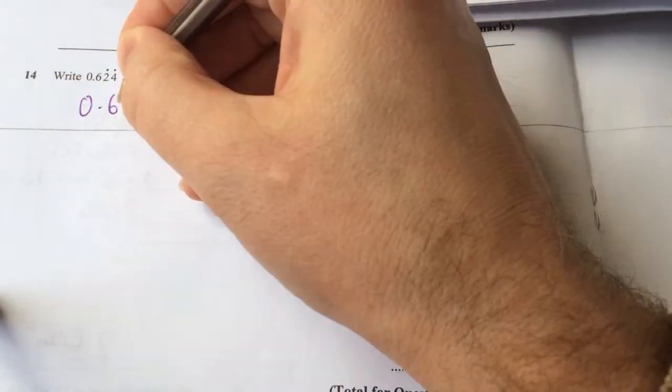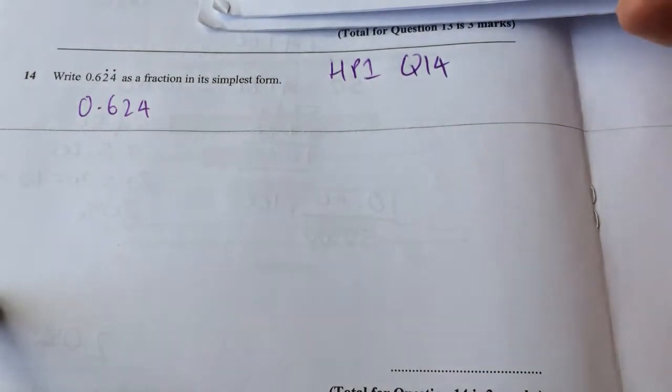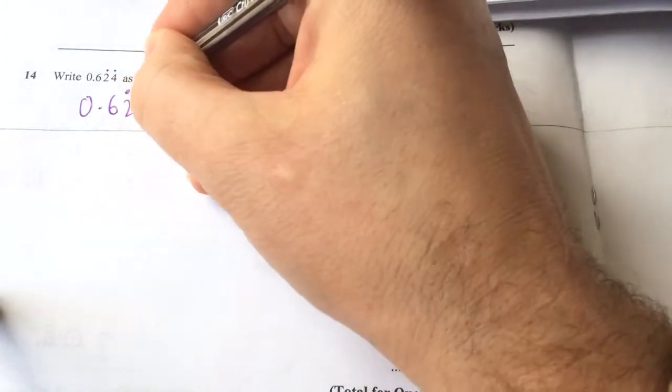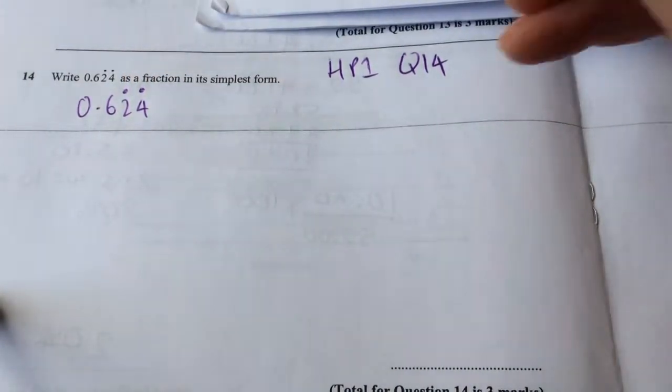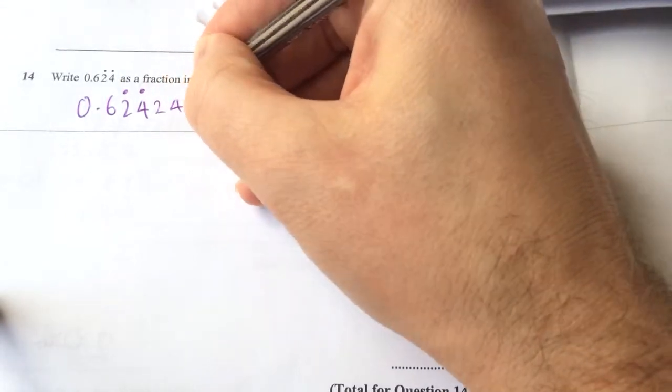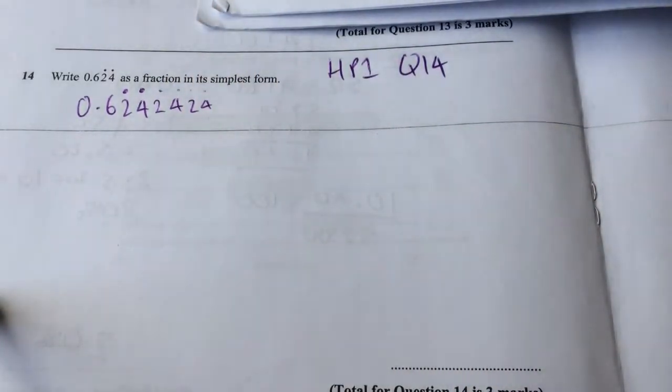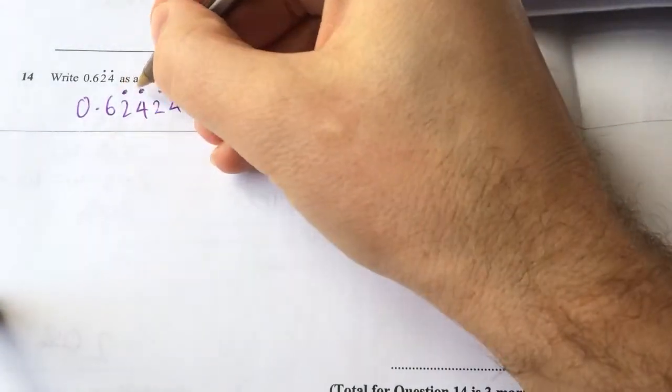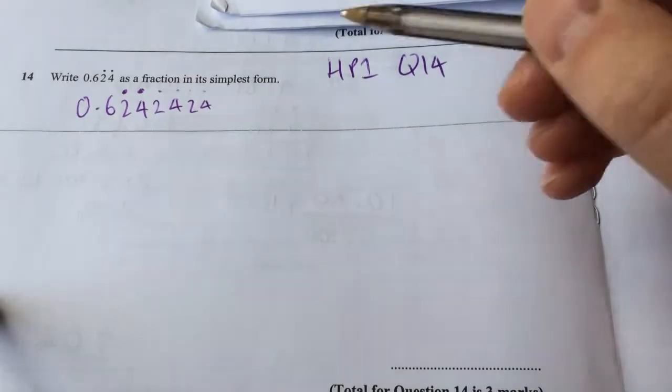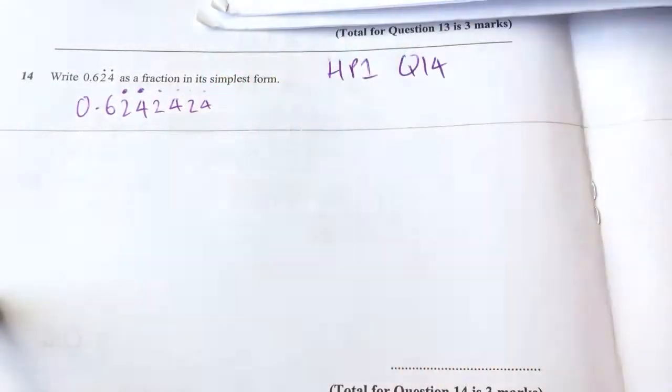We're asked to write 0.624 as a fraction in simplest form. Notice those dots above it mean that it's recurring, but also it's recurring 2424. So you might have seen another video about changing a recurring decimal into a fraction. We have to be particularly careful when it's two digits that are recurring.